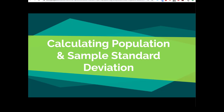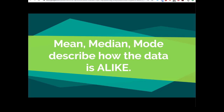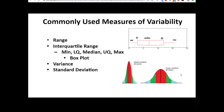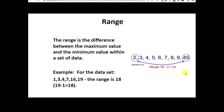Let's do some quick review. In the last chapter we talked about how mean, median, and mode are all measures of central tendency — they all describe how the data is alike. Measures of variability describe how the data is different. There are several commonly used measures of variability: we talked about range, interquartile range already, and in the last lecture we talked about variance. In this lecture we're going to talk about standard deviation. As a reminder, range is just the difference between the maximum value and the minimum value within a set of data.